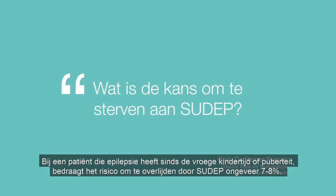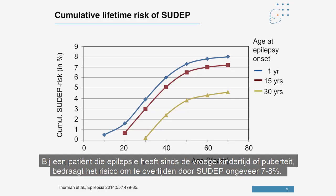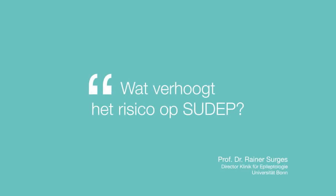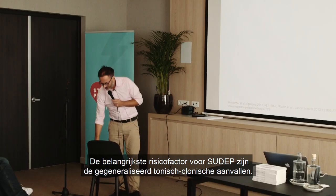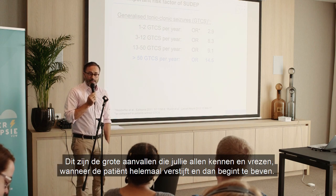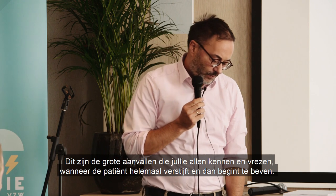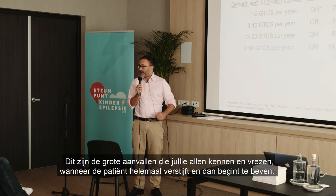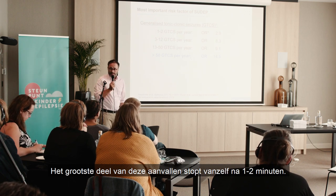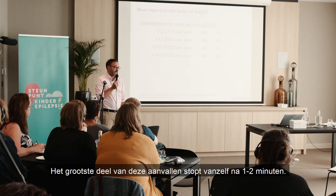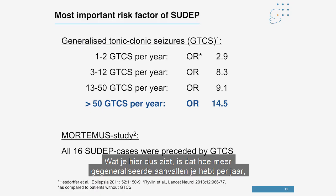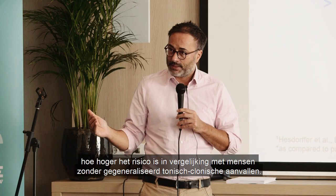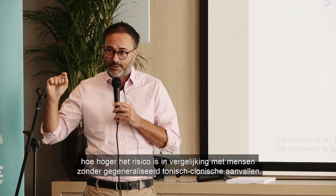In a patient who has had epilepsy since early childhood or puberty, the lifetime risk is about 7% to 8% of dying from SUDEP. The most important risk factor for SUDEP are generalized tonic-clonic seizures — the big fits where patients go into generalized stiffness and then start jerking, stopping spontaneously after one to two minutes in the vast majority of cases. The more generalized seizures you have per year, the higher the risk.